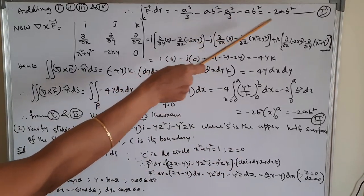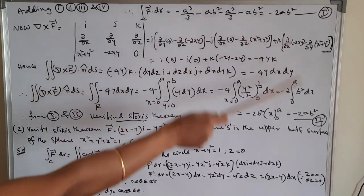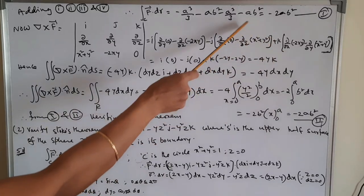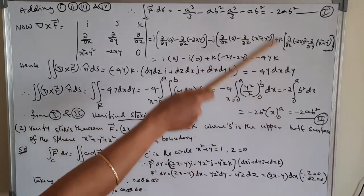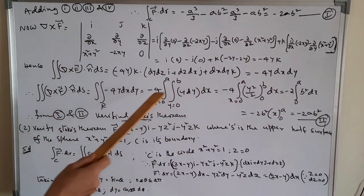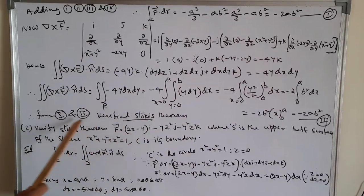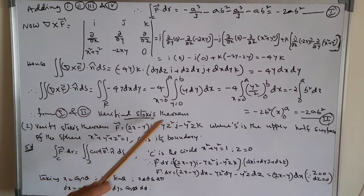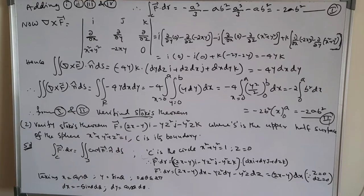Since equation (1) equals equation (2), both equal −2ab², LHS equals RHS and Stokes theorem is verified for the first problem.